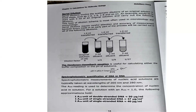Serial dilution involves the systematic dilution of an original solution in fixed steps, such as 1:2, 1:4, 1:8, and so on. An example would be to start with 3 mL of an original solution and carry out the following dilutions. This type of dilution schema is most often used in microbiology and immunology. Serial dilution requires careful attention and accuracy of measurement because errors made in an early part of the process will be carried forward into all the following dilutions.